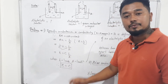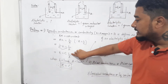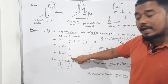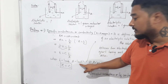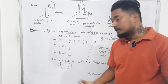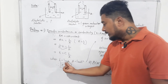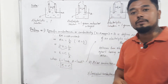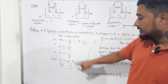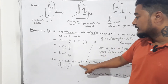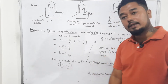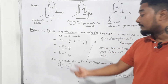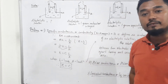Now if I take the distance between the two electrodes as 1 unit — whether 1 centimeter or 1 meter — and the cross-section area as 1 unit square, then substituting: κ = C × (1/1) = C. So when the distance is 1 unit and the area is 1 unit square, specific conductance κ equals conductance C.